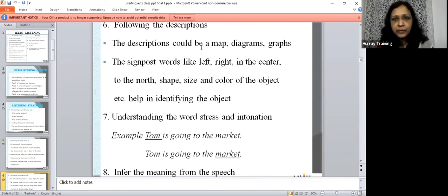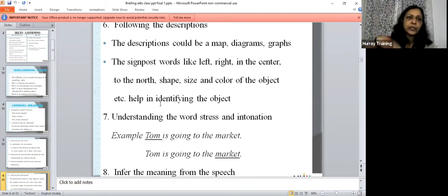Follow the descriptions. The description could be map labeling, diagram labeling, or graphs. The signpost words like left, right, in the center, the north, south, east, west, shapes, sizes, colors of objects, example, etc. Help you in identifying the objects when you try to pinpoint. When they say across the room, or across the street, there is a park. On the right side of it, there is a school. And behind the school, there is something that will be the dash. You have to find out what it is and write. As you're listening, what are they saying behind the school? Put that in the blank.